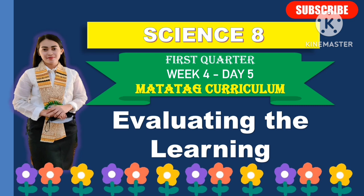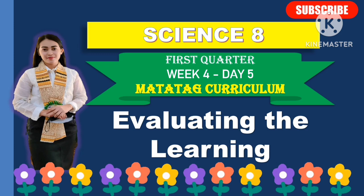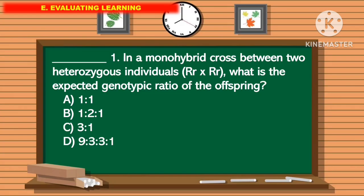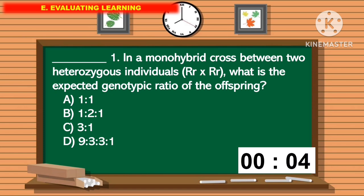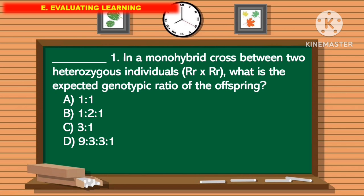This lesson is under the Matata curriculum. For question number 1, in a monohybrid cross between two heterozygous individuals, what is the expected genotypic ratio of the offspring? The correct answer is letter B.